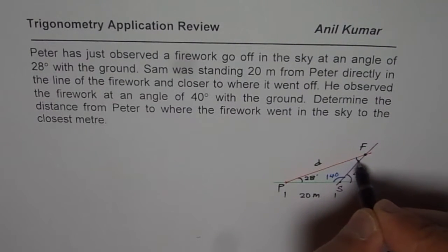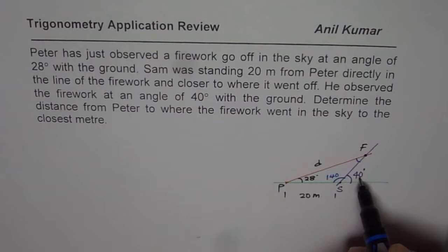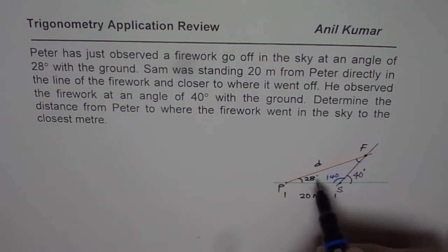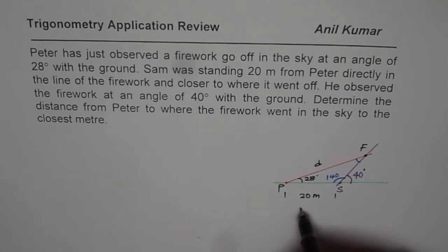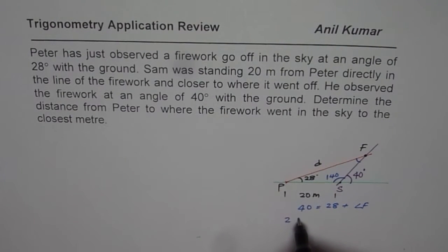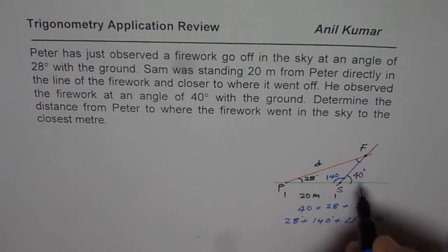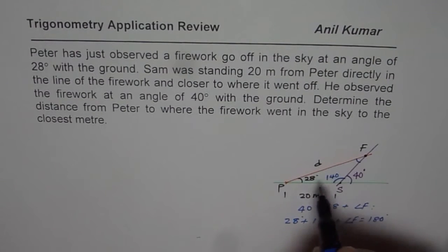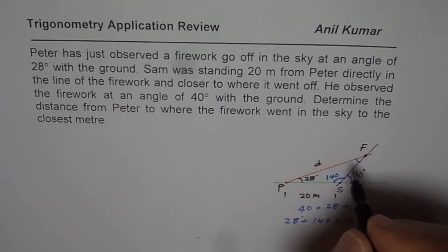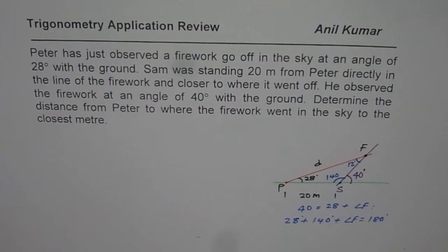We can also find angle F. Since 40 degrees is an exterior angle, it equals the sum of the two non-adjacent interior angles: 40 equals 28 plus angle F. Alternatively, using the sum of all angles: 28 degrees plus 140 degrees plus angle F equals 180 degrees. Either way, angle F equals 40 minus 28, which is 12 degrees.